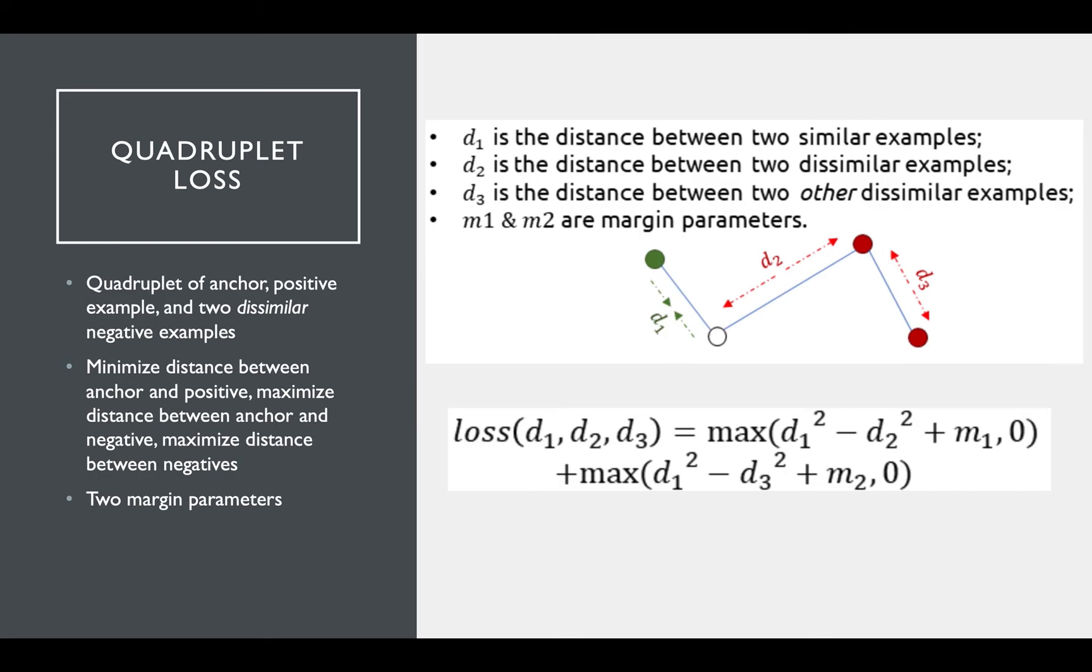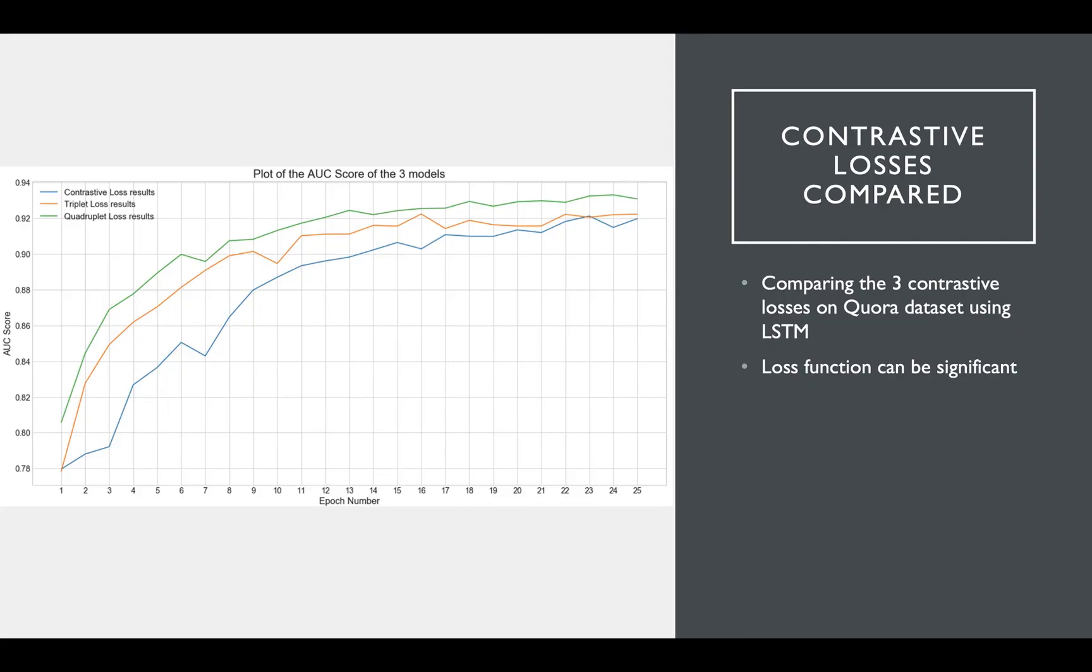So given that it may seem like quadruplet loss is too clunky to be worth the time, but it's important to note that there are real gains to be made by going through the effort. Here's an example where an LSTM with simple parameters is used to identify question pairs with the same intent in the Kaggle Quora dataset.